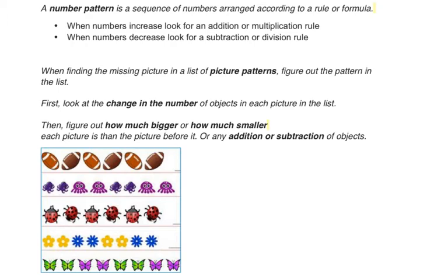When you're looking at a pattern that has numbers in it, this is a number pattern. It's a sequence of numbers that are arranged according to a rule or formula. When you see that the numbers are increasing, you're going to look for an addition or multiplication rule. When you see that the numbers are decreased, look for a subtraction or division rule.